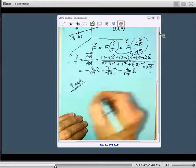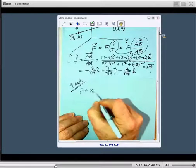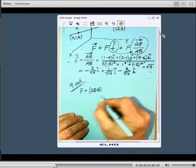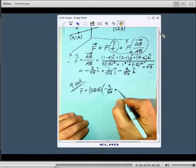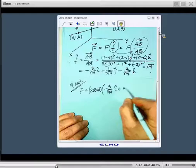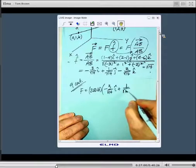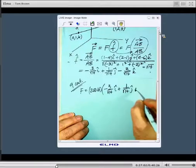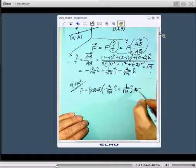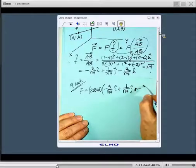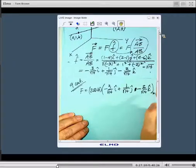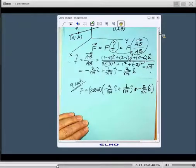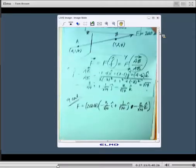So now what we've got is F equals 200 pounds times this minus 3 over square root of 14, i, plus 1 over the square root of 14, j, minus 2 over the square root of 14, k. Now, just from the signs, you could go and look at the unit vector.